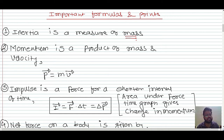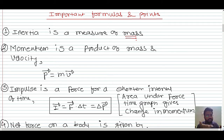For inertia of rest, consider this example: if you are standing in a bus and the bus suddenly starts, you will tend to fall backward. This is because the part of your body attached to the floor will be in motion, but your upper body will resist that motion, causing you to fall backward.